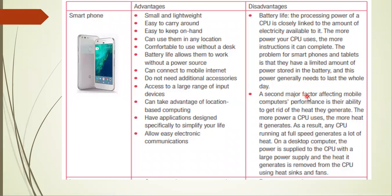The second major factor affecting mobile computer performance is the ability to get rid of the heat generated. The more power a CPU uses, the more heat it generates. Any CPU running at full speed generates a lot of heat. On desktop computers, power is supplied to the CPU with a large power supply, and the heat is removed using heat sinks and fans.